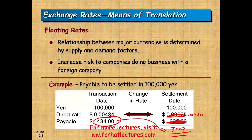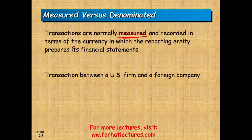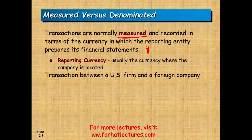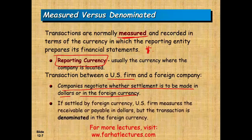That's a risk you are taking, and you're not in the business of foreign currency risk — you're in the business of buying materials, building products, and selling them. Transactions are normally measured and recorded in the reporting currency — U.S. dollars for our purposes. If settled in foreign currency, the U.S. firm measures the receivable or payable in dollars. For example, a payable of 100,000 yen at a rate of $0.004 would be recorded as a payable of $400 on the books.